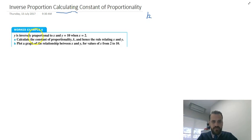Y is inversely proportional to x, so the way that we can write that is y is inversely proportional to x, and y equals 10 when x equals 2. Question A says calculate the constant of proportionality and hence find the rule relating x and y.